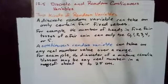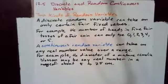In this video, we will discuss discrete and random continuous variables. There are two kinds of random variables. A discrete random variable can take on only certain fixed values.